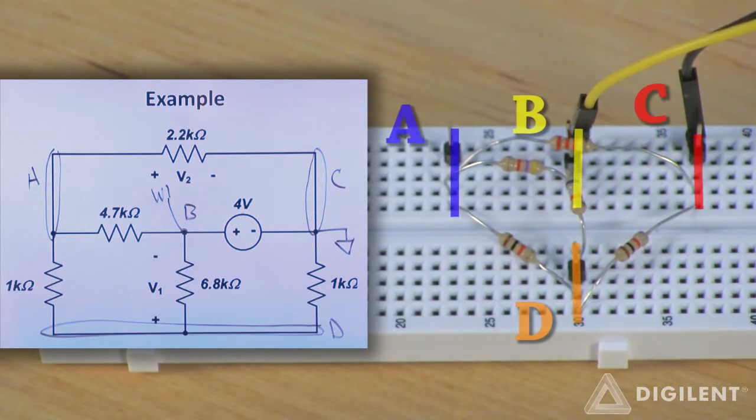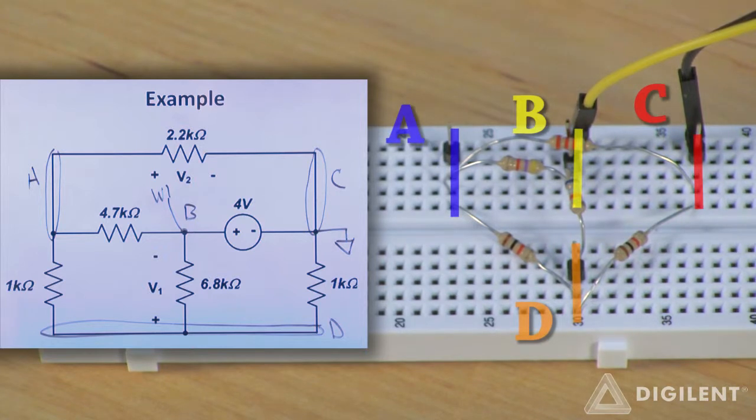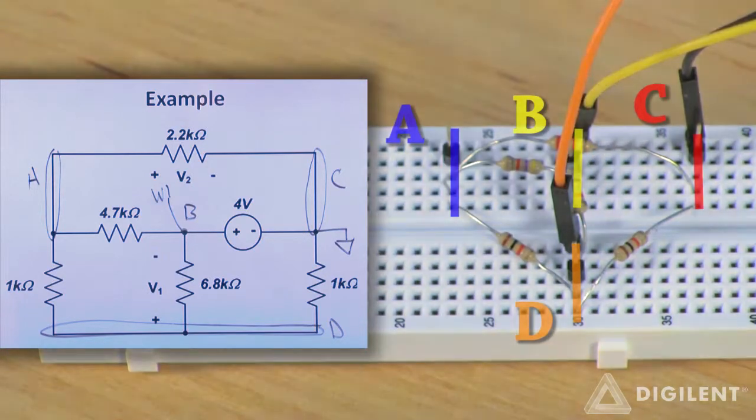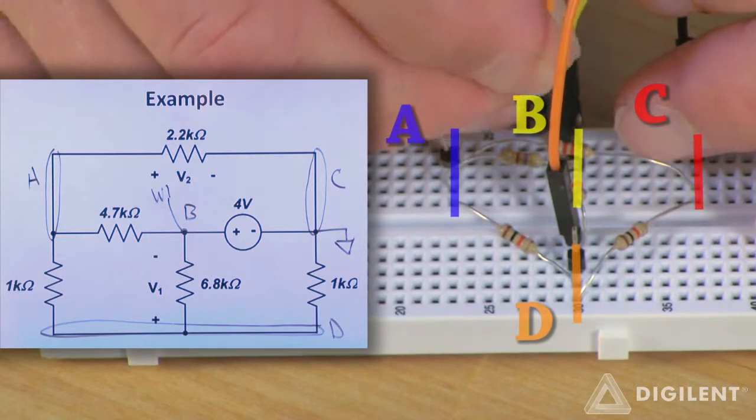Finally, I just need to connect my voltage measurements. I'll make the voltage measurements with the Analog Discovery's voltmeter instrument. I'll use channel 1 to measure the voltage V1. Since node D is assumed to be at the higher voltage, I'll connect channel 1 plus, the orange wire, to node D and 1 minus to node B.